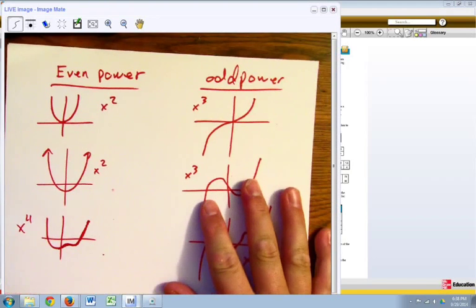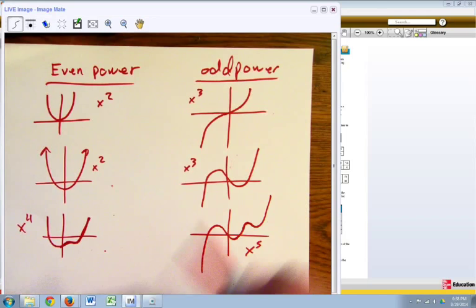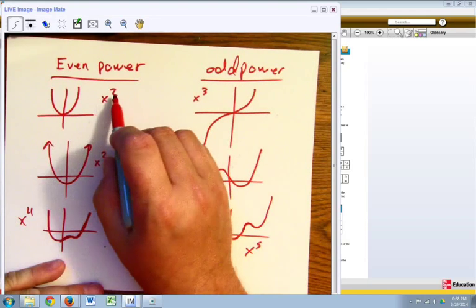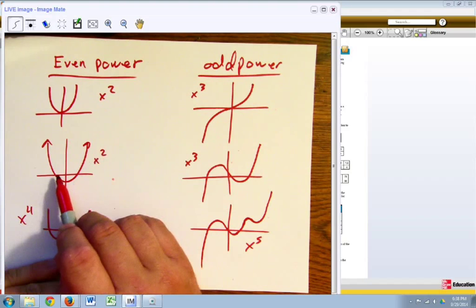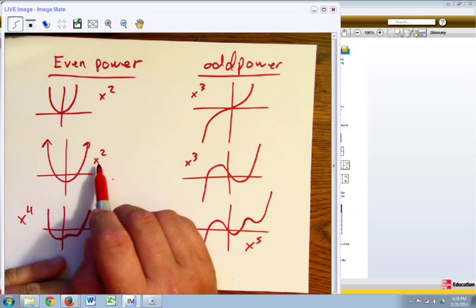We need to start looking at a couple powers. The other thing that leading term test tells us is the power. Now we've seen x squared like this where it has two solutions. We've even seen x squared where it had no solutions.